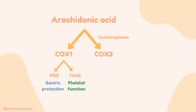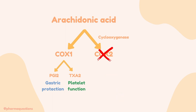Now let's take a look at COX2. COX2 makes the product prostaglandin E2, and this is a potent inflammatory mediator which is also seen in diseases such as rheumatoid arthritis and osteoarthritis. It is the inhibition of COX2 which offers the anti-inflammatory properties.